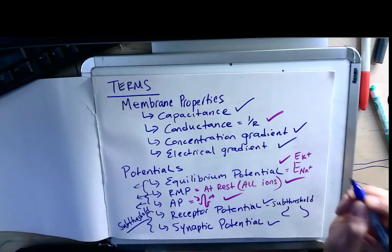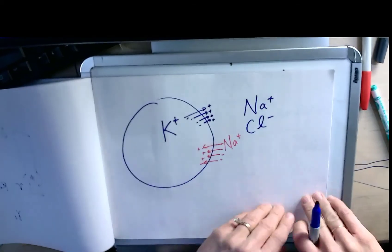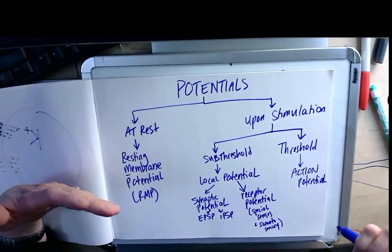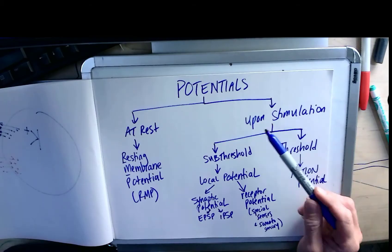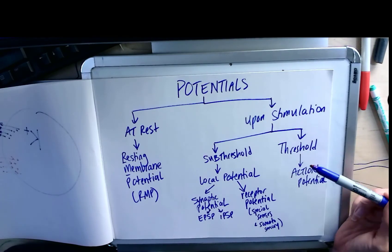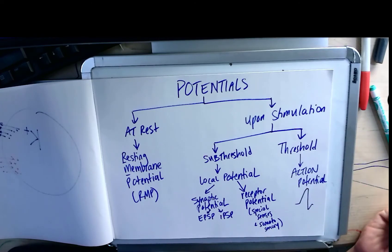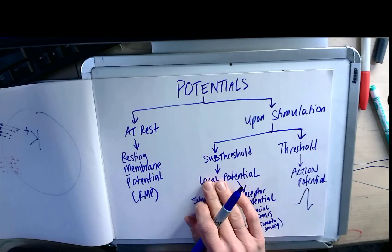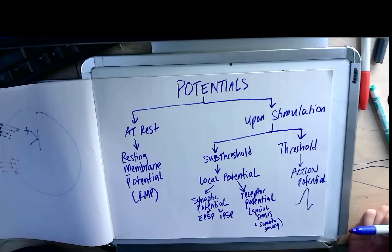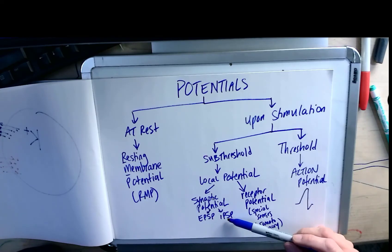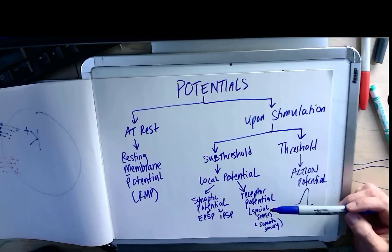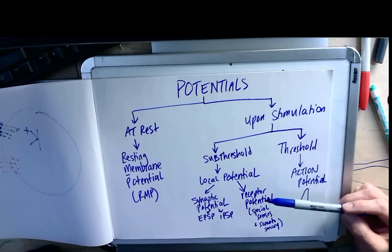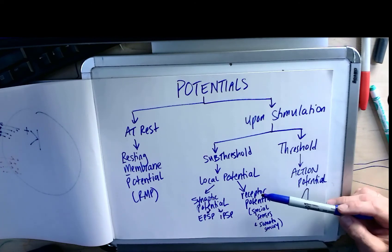Let me show you one more thing that sums everything up — this flow diagram. When you hear the term 'potentials,' think about the difference in voltage on the inside versus the outside of the membrane. If you're at rest, you have resting membrane potential (RMP). Upon stimulation, it depends on whether you've reached threshold. If you hit threshold, you get an action potential — all or none. If you're subthreshold, you get a small graded potential, often called a local potential. At the synapse, measuring the voltage change on the postsynaptic cell gives you an excitatory or inhibitory postsynaptic potential. In a receptor cell — photoreceptor, olfactory receptor, nociceptor, Pacinian corpuscle, Meissner's — the energy conversion from something like a photon to a voltage change is called receptor potential.